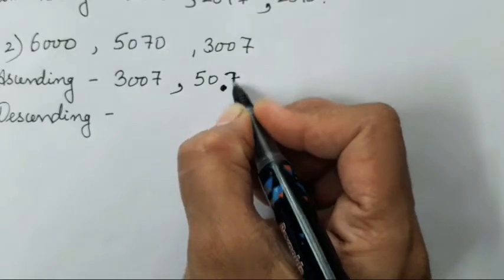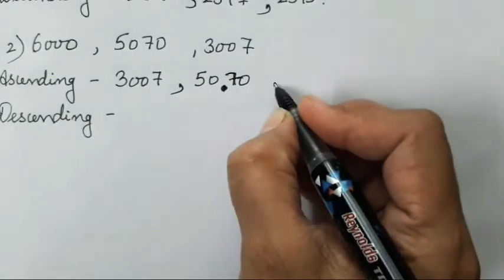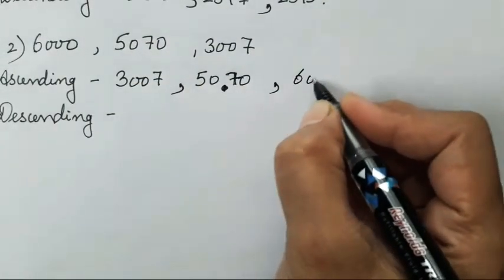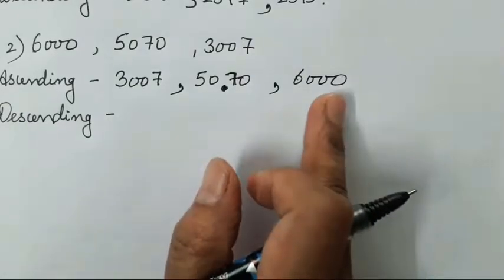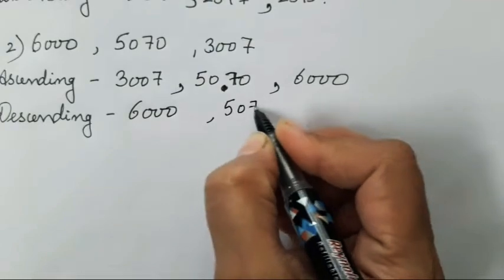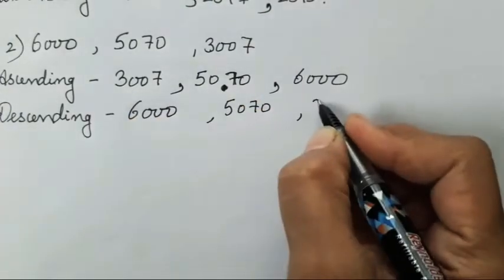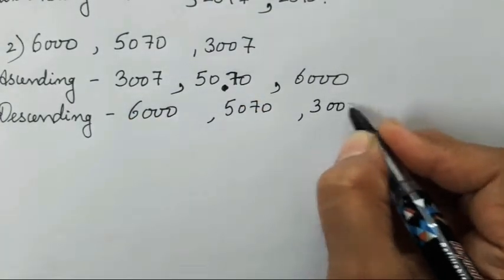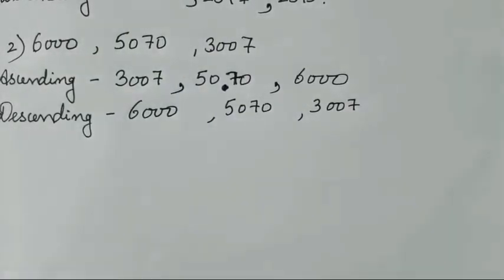No need to write commas because there will be more commas. And last is going to be 6000. Now descending - this you have to write first, then middle number will remain same, and third is going to be 3007. Isn't it easy?